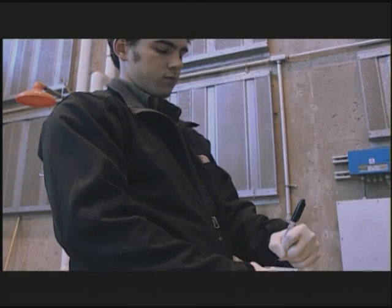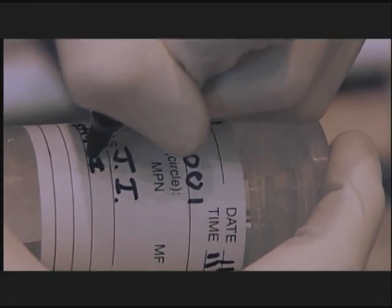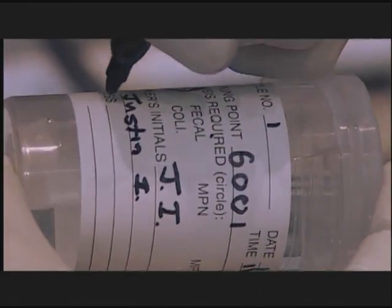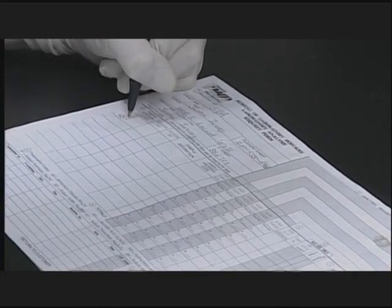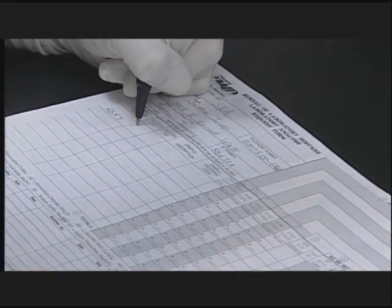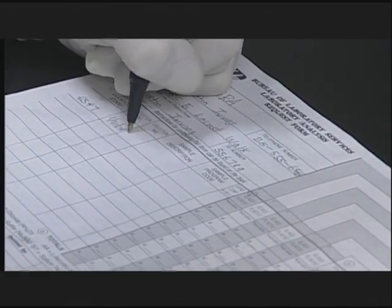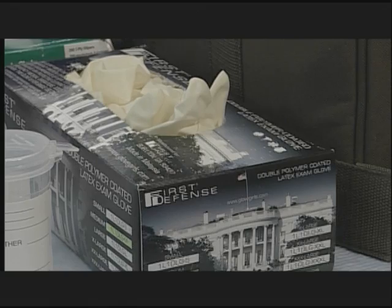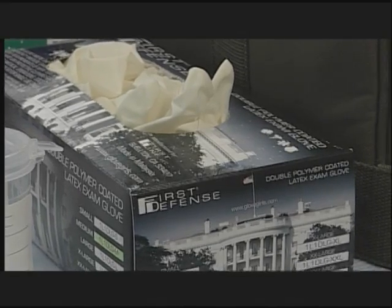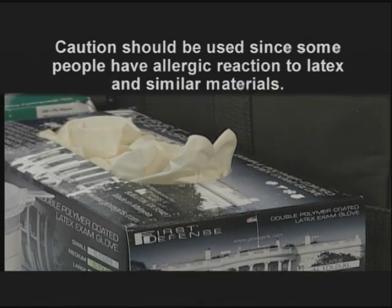This information should be written in waterproof ink on the label, which is or will be securely affixed on the sampling container. The same information should be found on the chain of custody sheet, along with other pertinent information such as sampling site conditions that could affect the integrity of the sample. The use of disposable non-powdered gloves is highly recommended. Caution should be used since some people have allergic reactions to latex or similar materials.